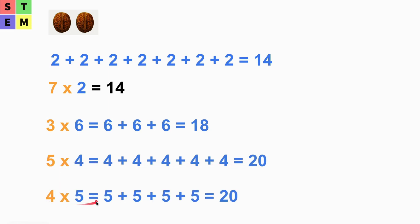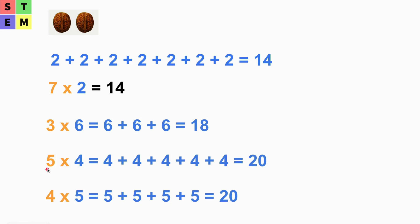Let's try another way: four times five. We have five plus five plus five plus five — four times. Five plus five is 10, ten plus five is 15, and fifteen plus five is 20 again. So we can see that five times four equals four times five.